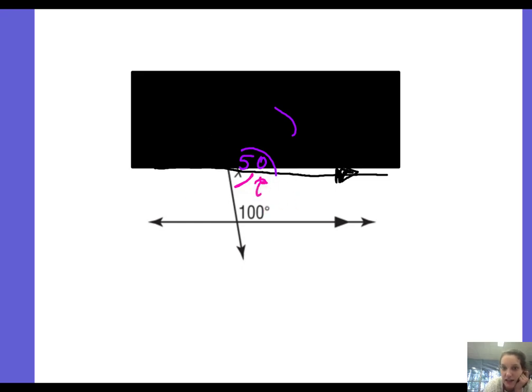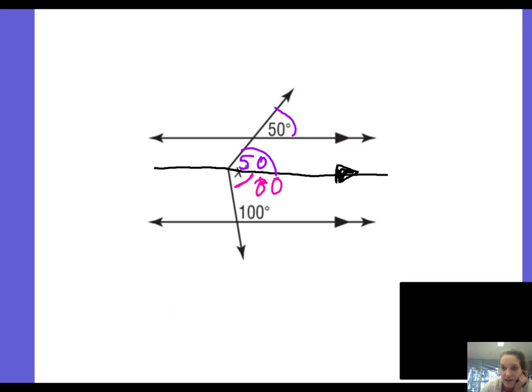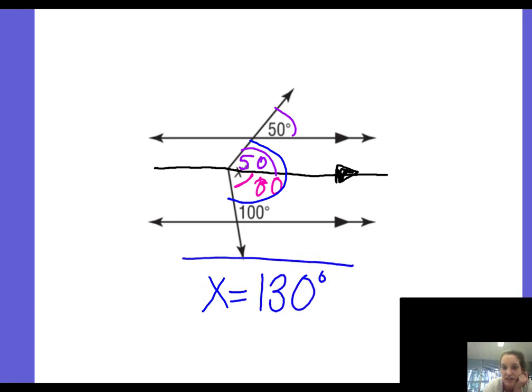So now we're trying to find the measure of x, that whole angle. So I know the top piece is 50, I know the bottom piece is 80, so I'm just going to add those together to get x. So x is that whole thing, x is 130 degrees.